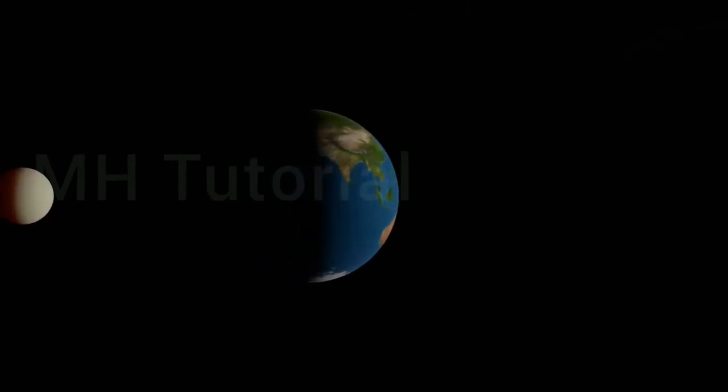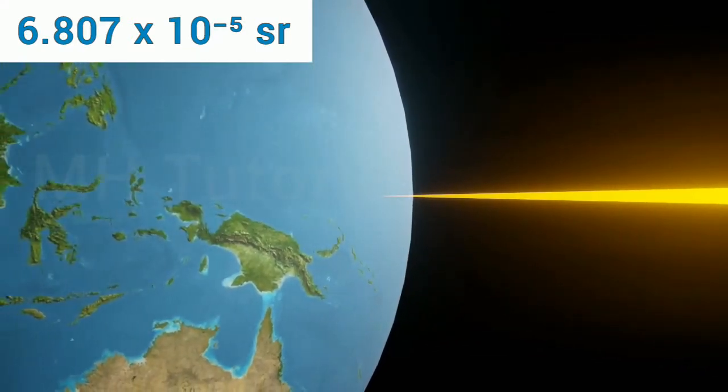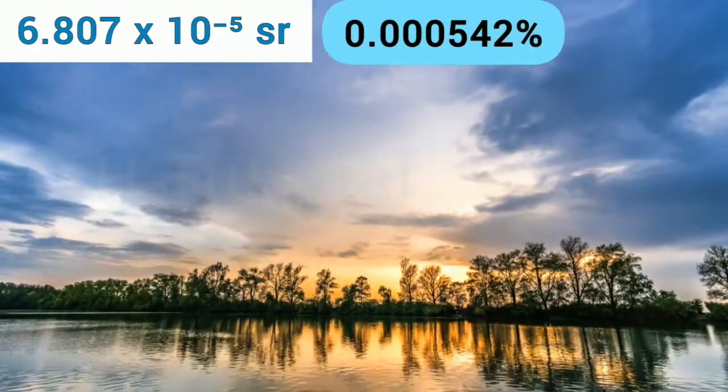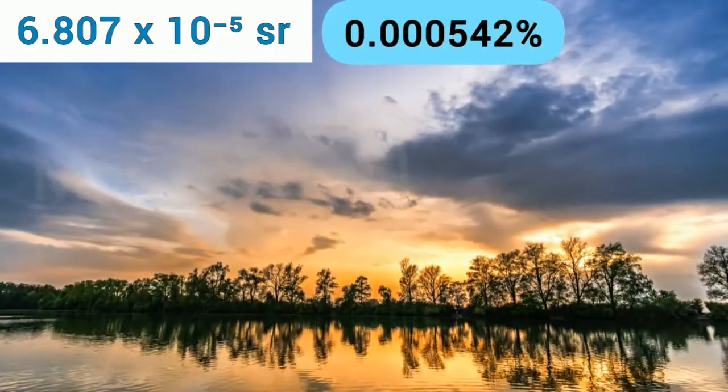The sun or the moon creates almost equal solid angle on the surface of the earth. It is roughly 6.807 into 10 to the power minus 5 steradian, which is about a portion of 0.000542 percent of the total viewable sky.